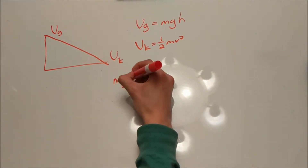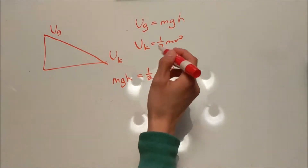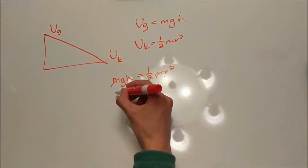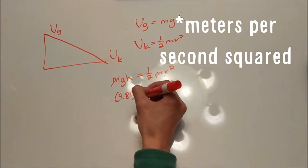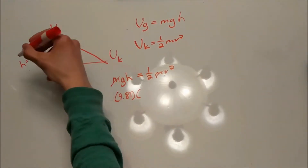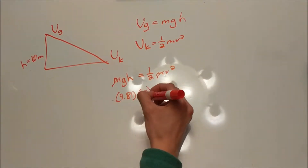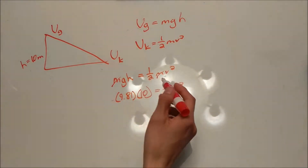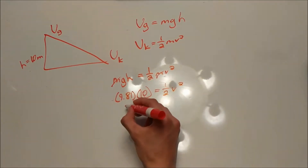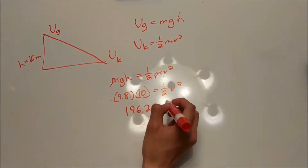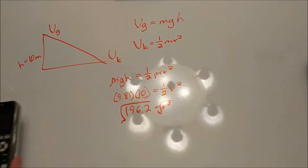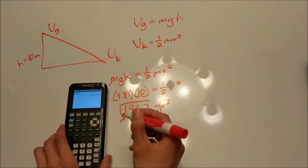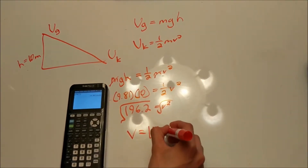That becomes MGH equals one-half MV squared. And because there's a mass on both sides, we can cancel that out — that makes this equation a lot easier. G is the acceleration due to gravity, which we know to be 9.81 meters per second squared. The height of the hill from where I started to where I ended was approximately 10 meters. So GH equals one-half V squared. We multiply those two numbers together and multiply both sides by 2 to get rid of the one-half. We get 196.2 equals V squared. Taking the square root of both sides, our final velocity is approximately 14 meters per second.